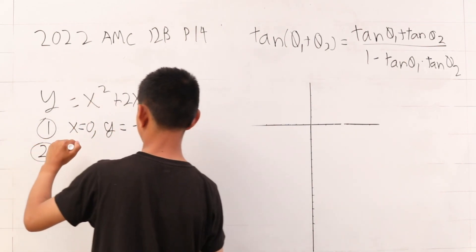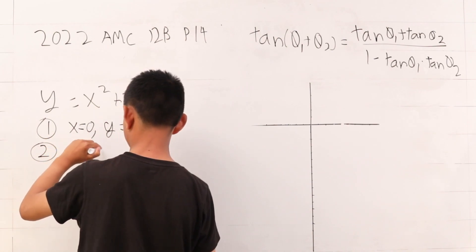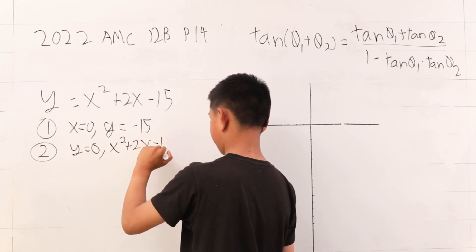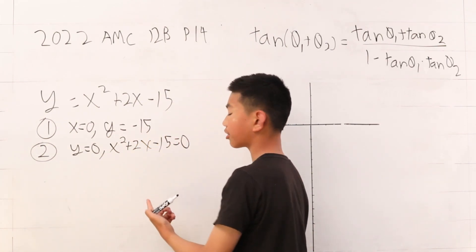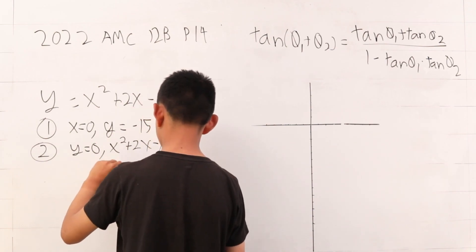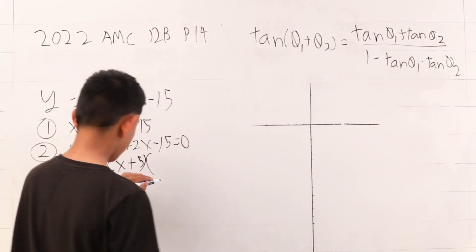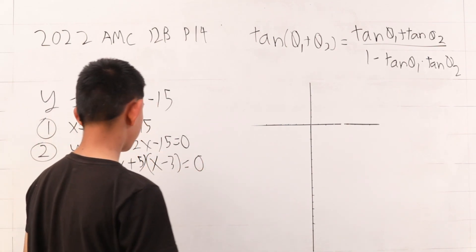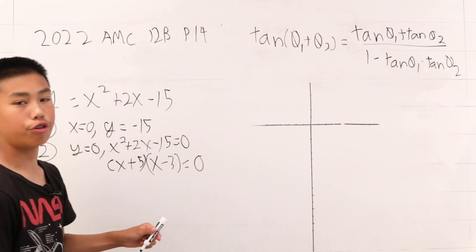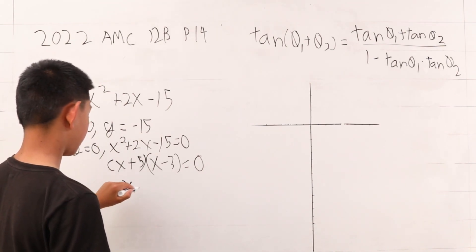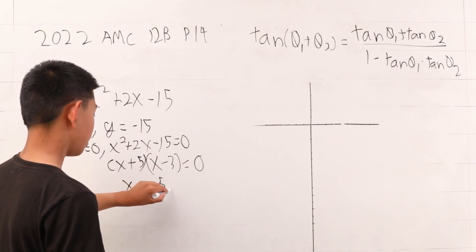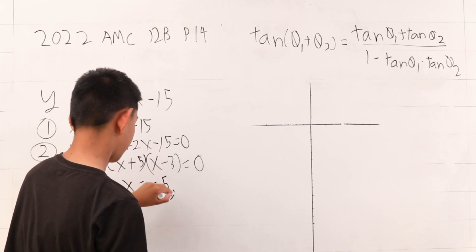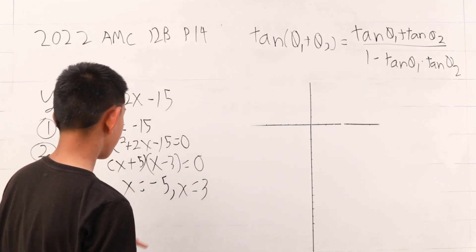Our second case is where y is 0. Therefore, x squared plus 2x minus 15 is 0. We can factor this as x plus 5 times x minus 3 is 0. So now, we have our other two points from here. We get that x is negative 5 and x is positive 3.